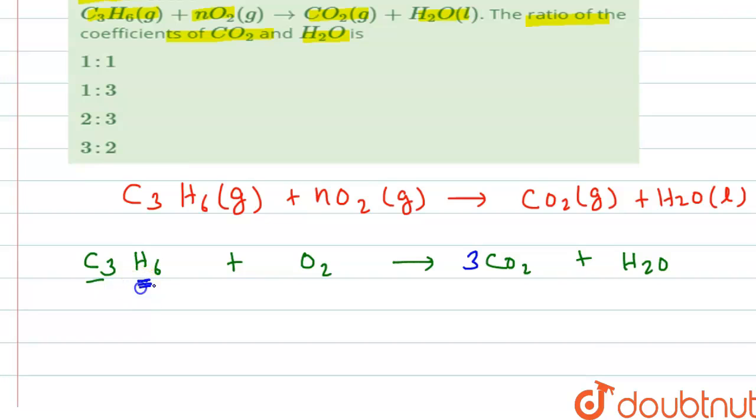We have 6 molecules of hydrogen on this side, so we will multiply H2O by 3 to get 6 molecules of hydrogen on this side too.